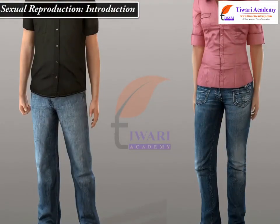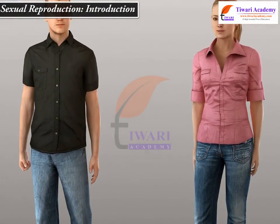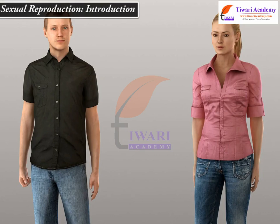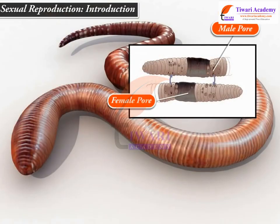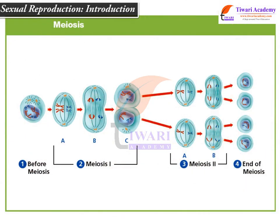Organisms that reproduce sexually have two different sexes, male and female. Both sex organs may be present in the same body — such animals are known as bisexual or hermaphrodite animals, for example, earthworm. Formation of sperms and ova involves meiosis or reduction division, through which haploid gametes are formed from diploid cells.